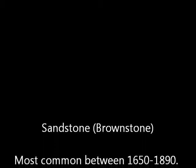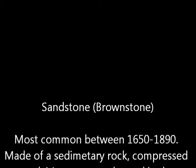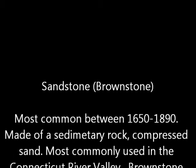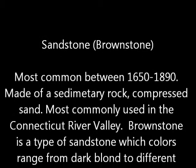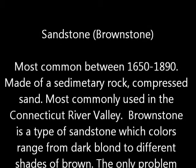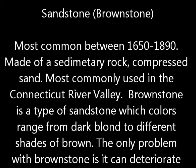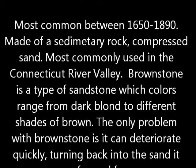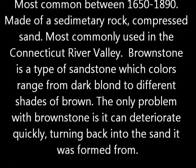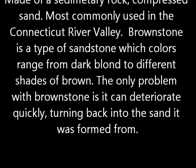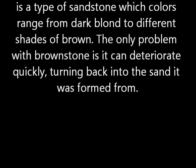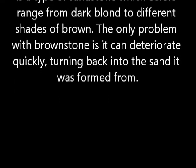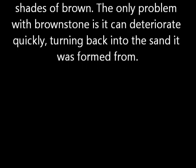Most common between 1650 and 1890, made of sedimentary rock, compressed sand. Most commonly used in the Connecticut River Valley, brownstone is a type of sandstone which colours range from dark blonde to different shades of brown. The only problem with brownstone is it can deteriorate quickly, turning back into the sand it was formed from.